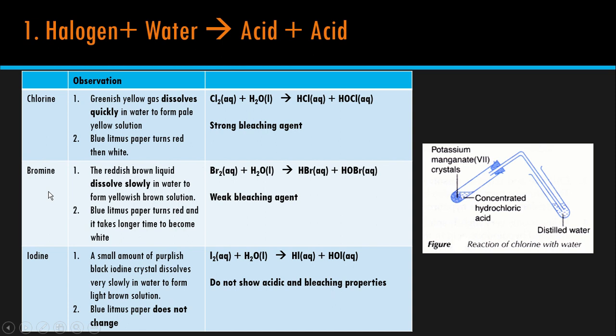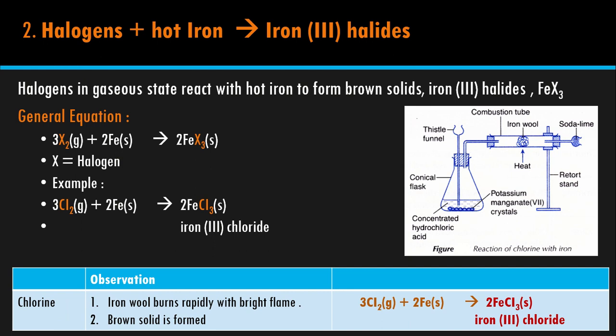The second reaction: halogen dengan hot iron atau logam iron. The product is iron(III) halide — metal halide. Warna brown because iron(III) is brown in color. General equation: X2 (halogen) reacts with Fe (hot iron) to form metal halide. Contoh, kita ambil Cl2 plus Fe, after reaction produce FeCl3. Kena cross Cl dengan Fe 3+, jadi dapat FeCl3. Balance equation: dapat 2 sini, dapat 2 sini, dapat 3 sini. Nama dia metal halide iaitu iron(III) chloride.